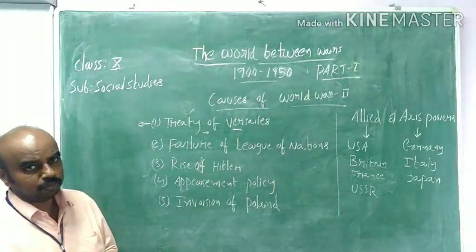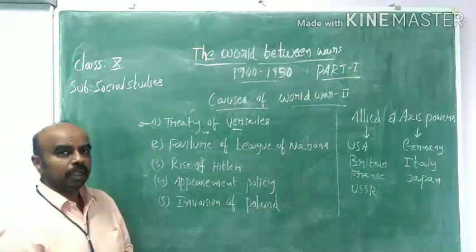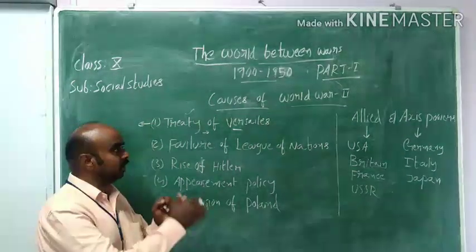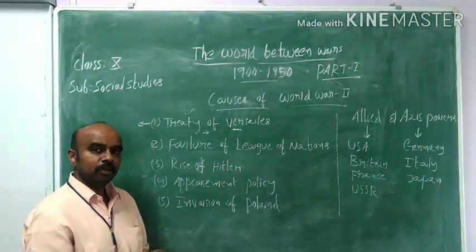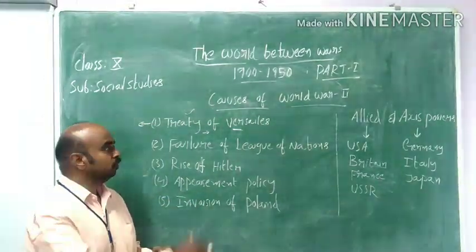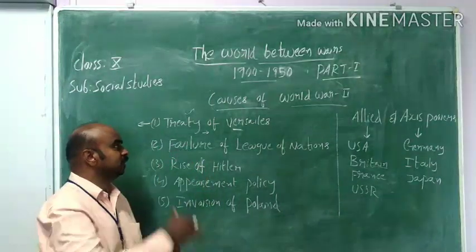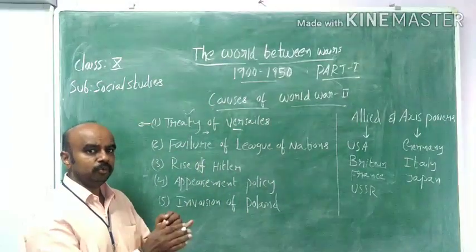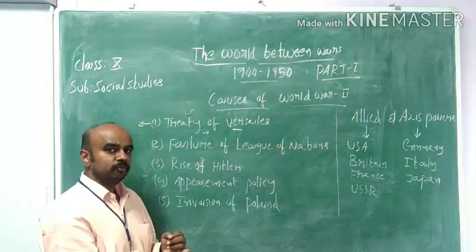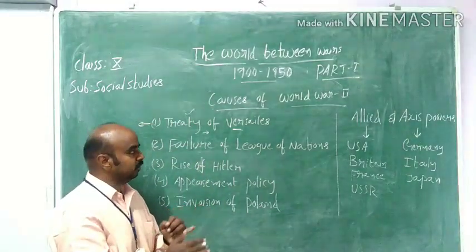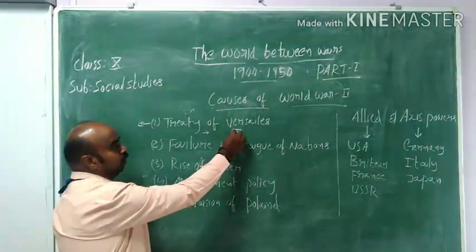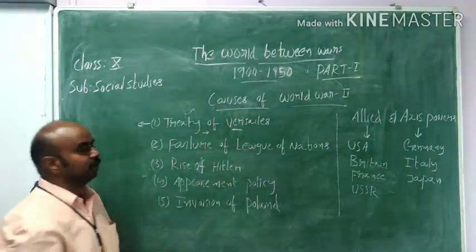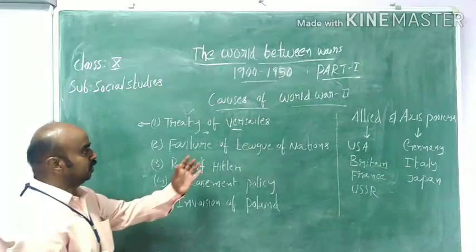Hitler, after coming to power, wanted to take revenge against the countries who were involved in designing this Treaty of Versailles — which we will discuss when we come to that topic. This is what we call the Treaty of Versailles.